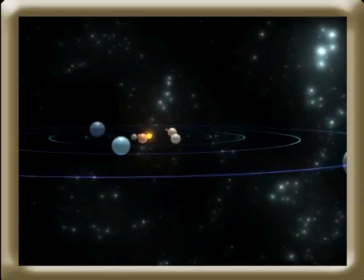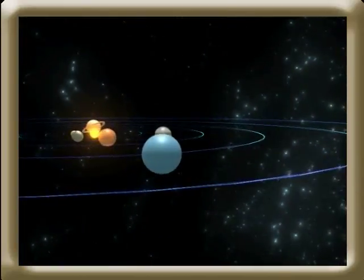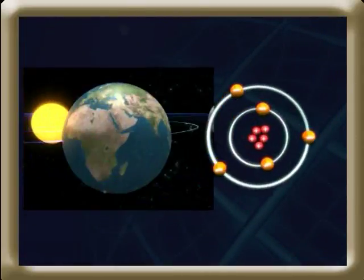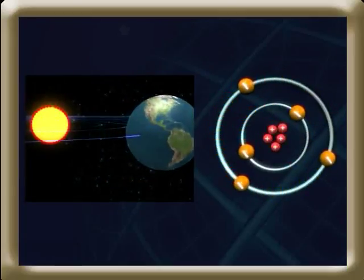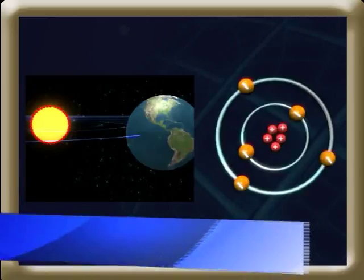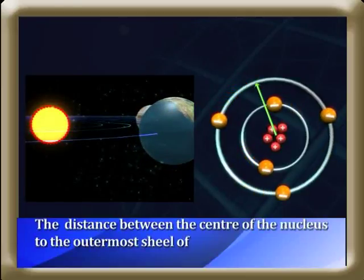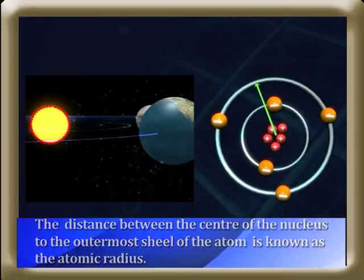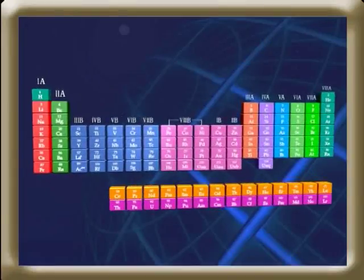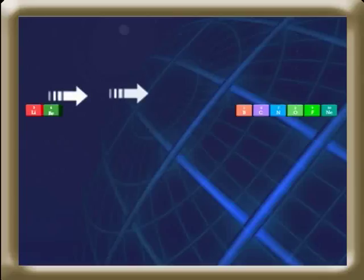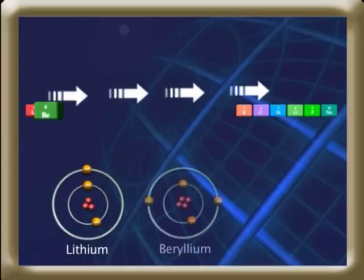Look at the solar system — the planets revolve around the Sun on a fixed orbit. The same principle is applied to an atom: in the place of the Sun, the nucleus is present, and the planets resemble electrons which revolve in specified shells. The distance from the center of the nucleus to the outermost shell is known as the atomic radius. In a period, moving from left to right, atomic number increases, causing an increase in nuclear charge, pulling electrons towards it and thus reducing the radius. So atomic radius decreases as we move from left to right in a period.